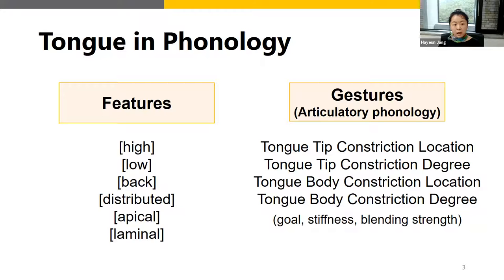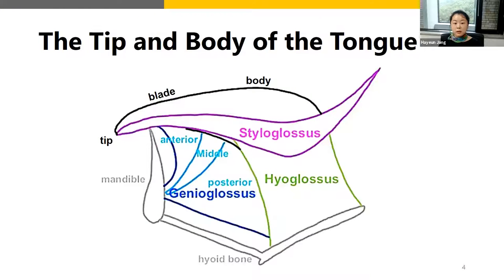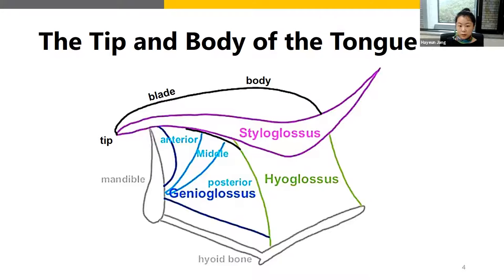What I focus on in this talk is the interaction between the tongue tip, blade, and the body. It is hard to see these interactions in the features and gestures themselves. The tongue tip, blade, and body are physically connected by musculature. The pink-colored muscle group named styloglossus runs from the tongue tip to the tongue body. Due to its structure, attachment, and contraction direction, if the tongue body is farther back in the vocal tract, the tongue tip is likely to be more posterior together.